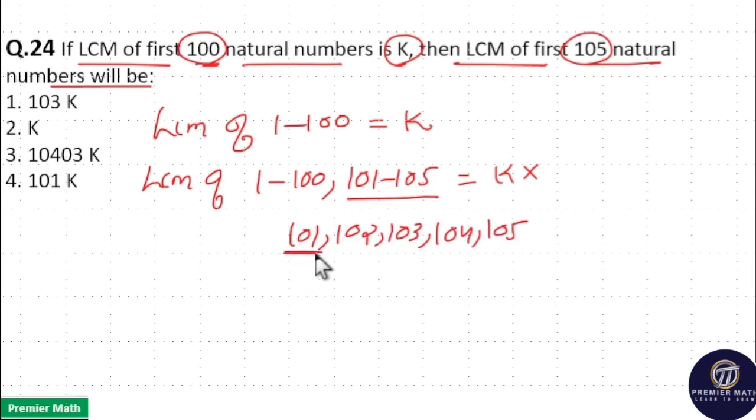Now 101 is not divisible by any other number other than 1 and 101. So take 101.